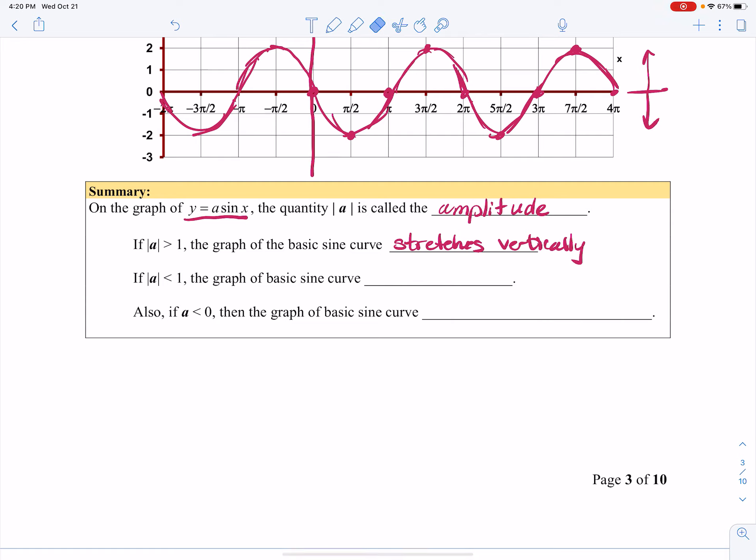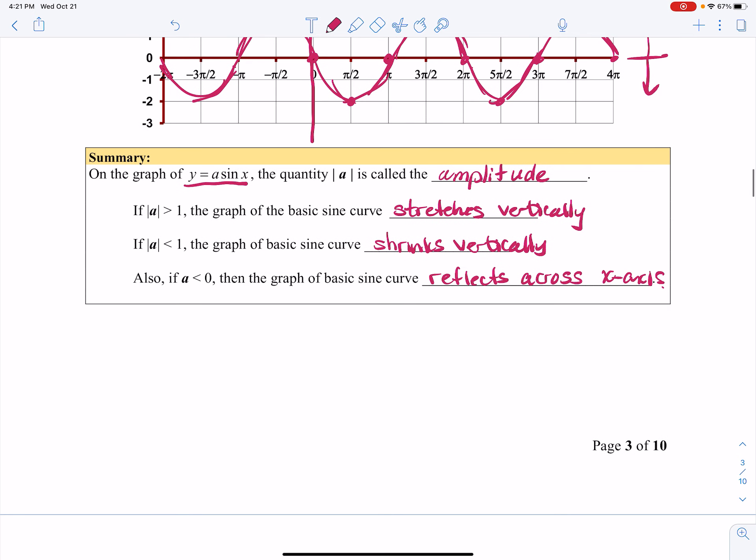And if a is less than 1, the graph of the basic sine curve will shrink vertically. And if a is less than 0, notice there's no absolute value there, then the graph of the basic sine curve reflects across the x-axis. So that's all we have for the sine curve right now. This will develop as we go. So thank you for watching.